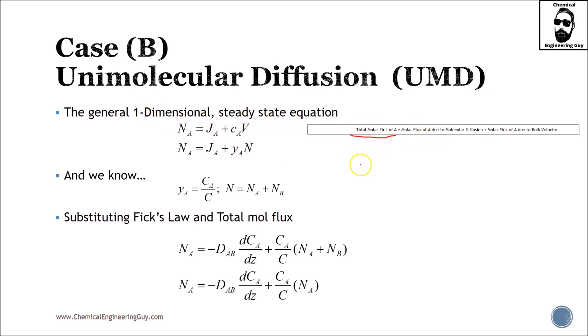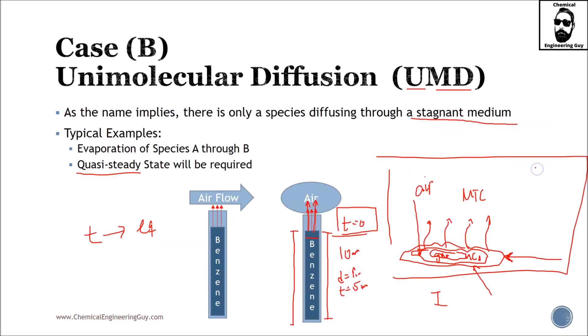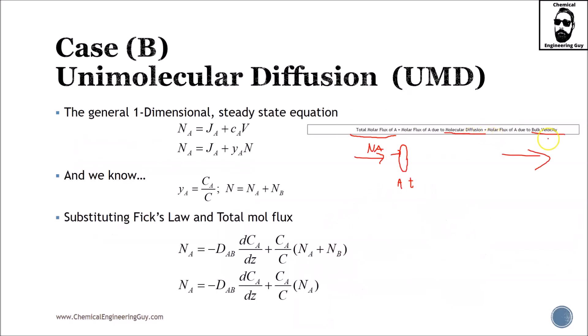The total molar flux of A, which is total number of moles of A passing through a unit area per unit time, equals the molar flux of A due to molecular diffusion, plus the molar flux of A due to the bulk velocity. So as you can imagine, there is bulk velocity per se, but in this example, not that visible. But in a pipe, you could have a bulk velocity stronger. And we got this: molar flux of A equals JA plus concentration of A times velocity.